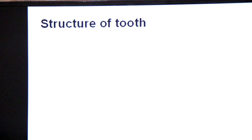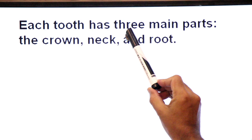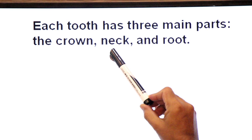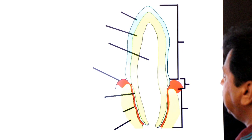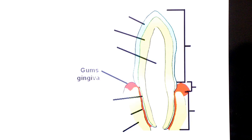Each tooth has three main parts: the crown part, the neck part, and the root part. This is an unlabeled diagram of a tooth — we will label it and study all three parts: crown part, neck part, and root part on this picture.